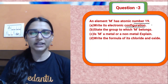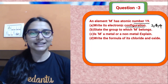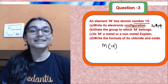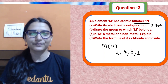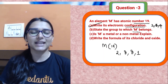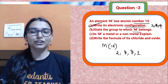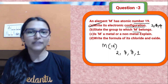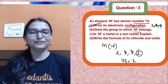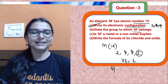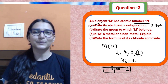For element M with atomic number 19, the configuration is not 2,8,9 because the last valence shell cannot have more than eight electrons. The correct configuration of M is 2,8,8,1 — the last electron goes into the M shell. State the group to which M belongs: we look at valence electrons. M has one valence electron, and when valence electrons equal one or two, the group number equals the number of valence electrons. So M belongs to Group 1.